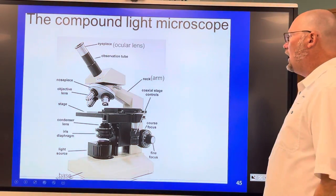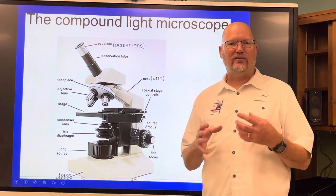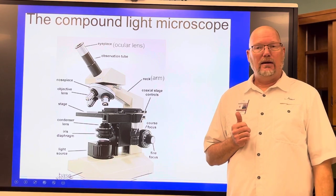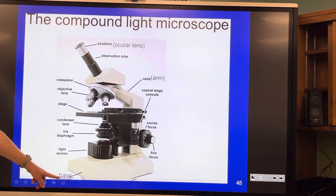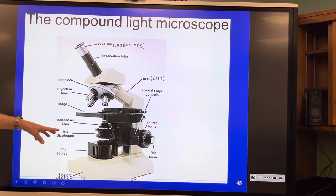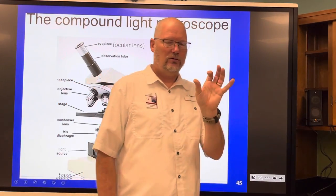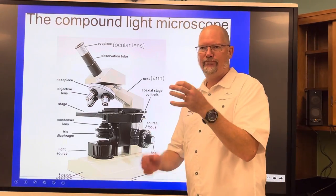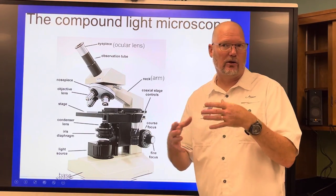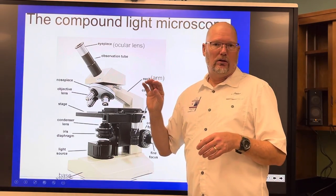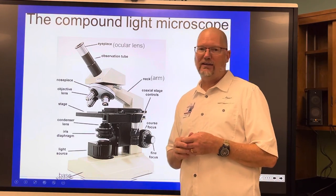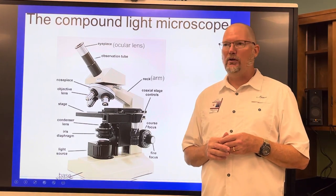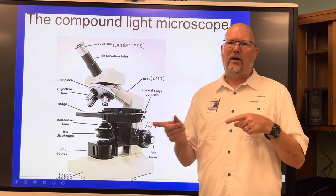Your last task is to label a diagram of the microscope like the one we have in class. All the parts are here: base, light source, iris diaphragm — the diaphragm opens and closes to different widths to let in different amounts of light depending on what you're looking at. The video will be paused so you can label this in your notes.